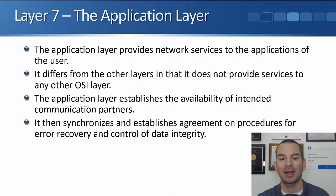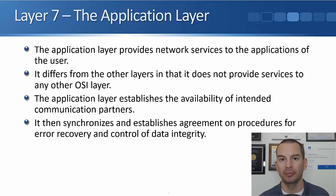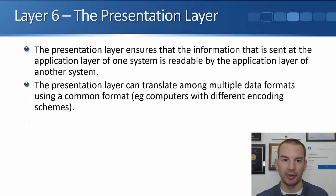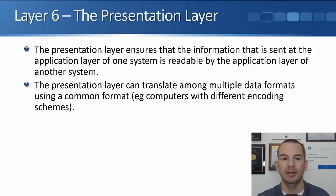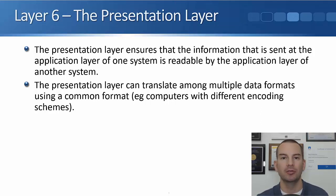The application layer synchronizes and establishes agreement on procedures for error recovery and control of data integrity. Data integrity means checking that data has not been altered or corrupted in transit. The next layer is layer six, the presentation layer. This ensures that the information sent at the application layer of one system is readable by the application layer of another system. The presentation layer can translate among multiple data formats using a common format — for example, for computers with different encoding schemes.